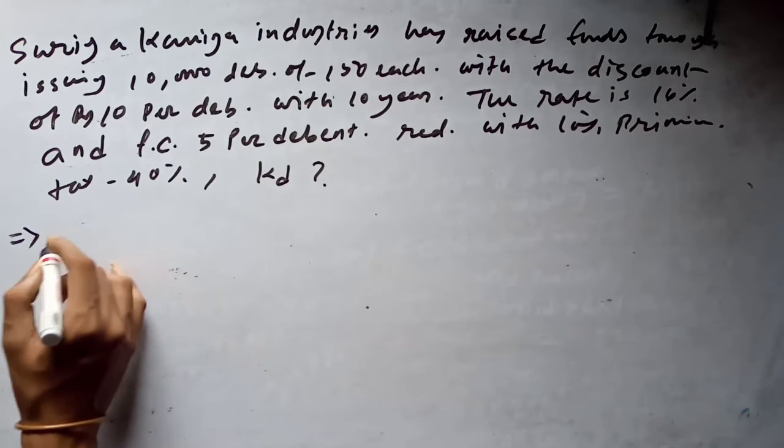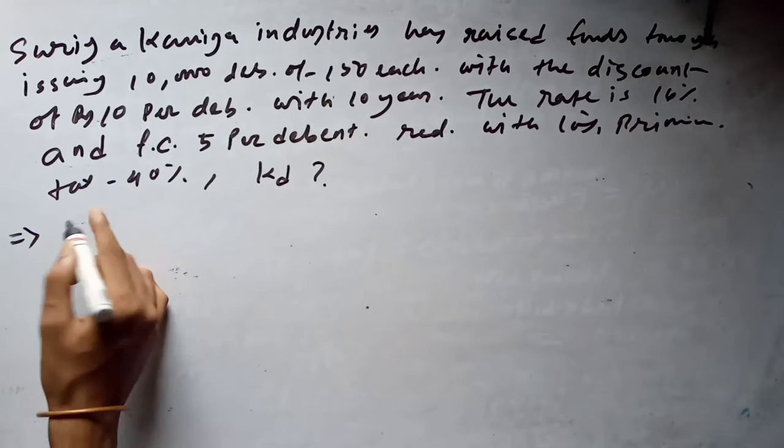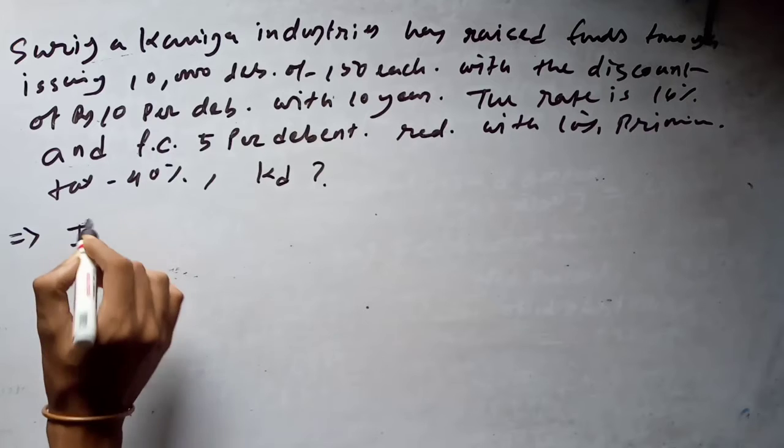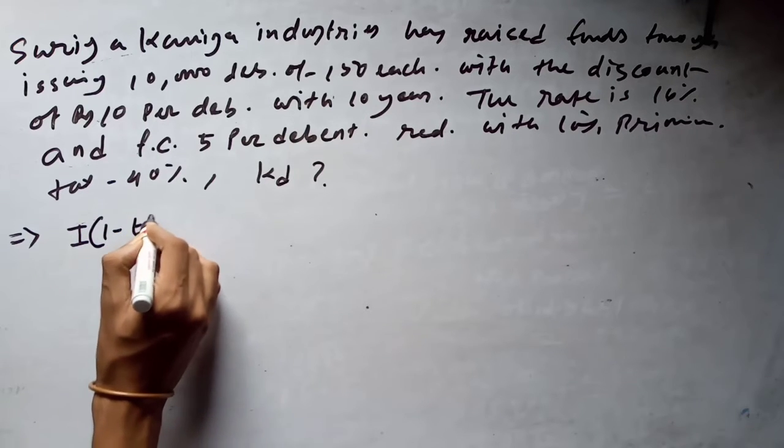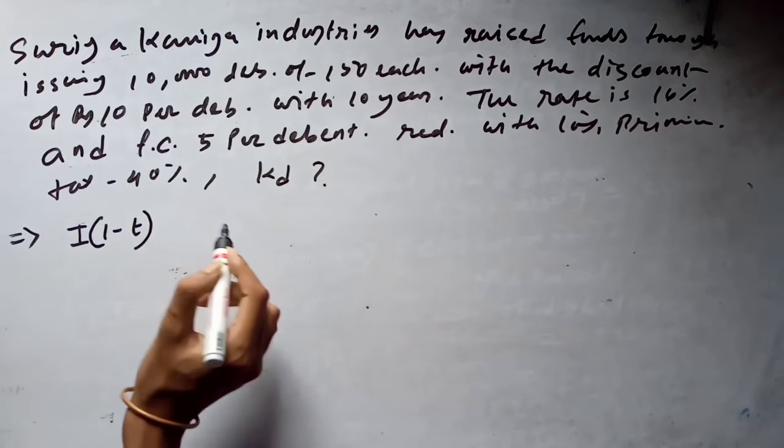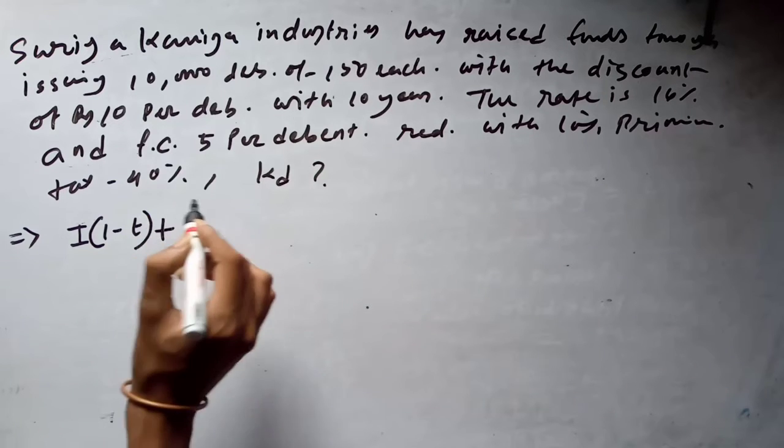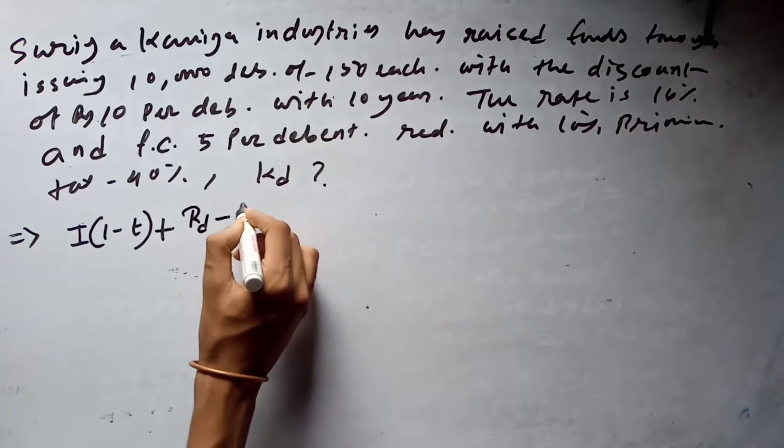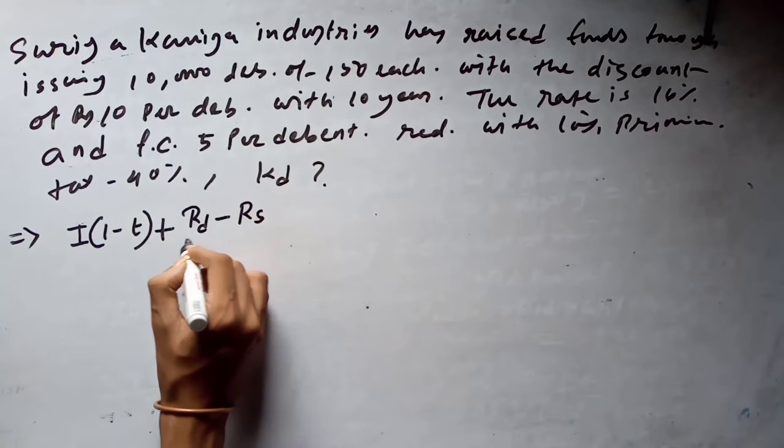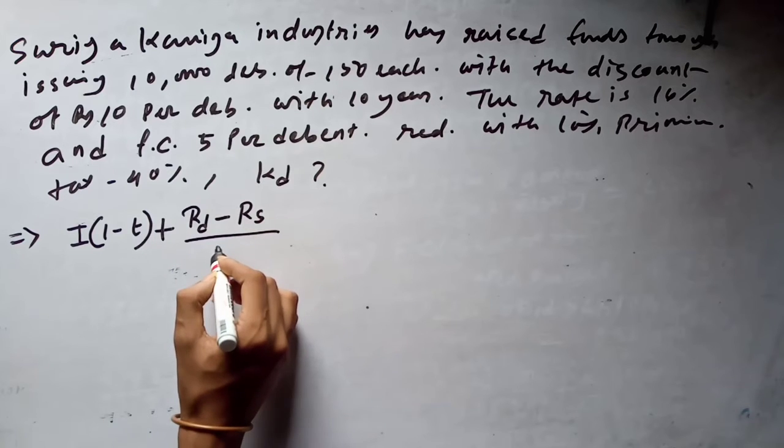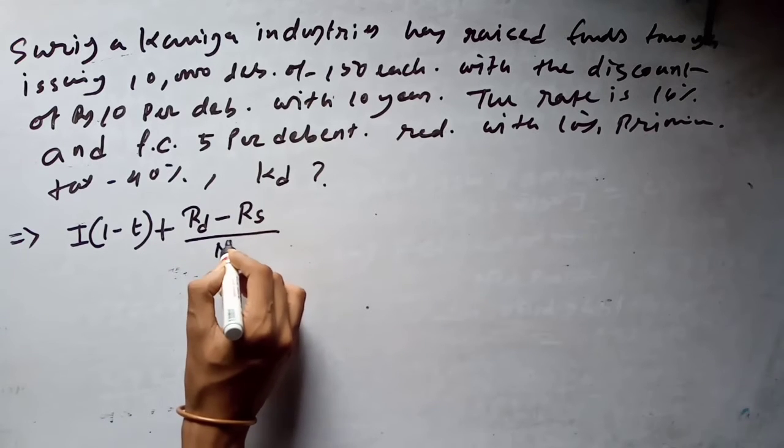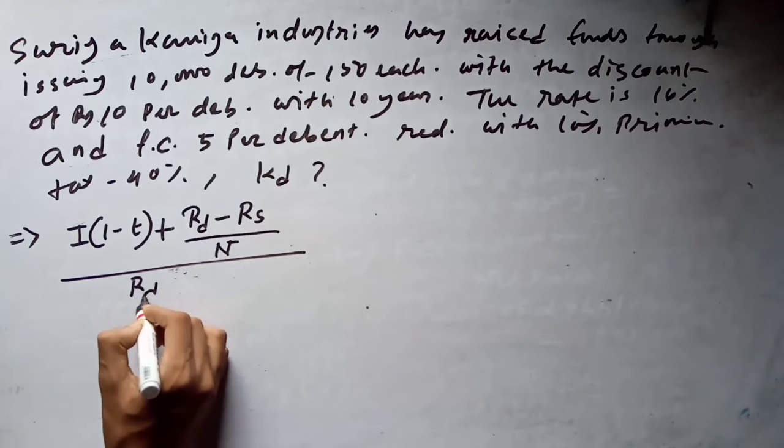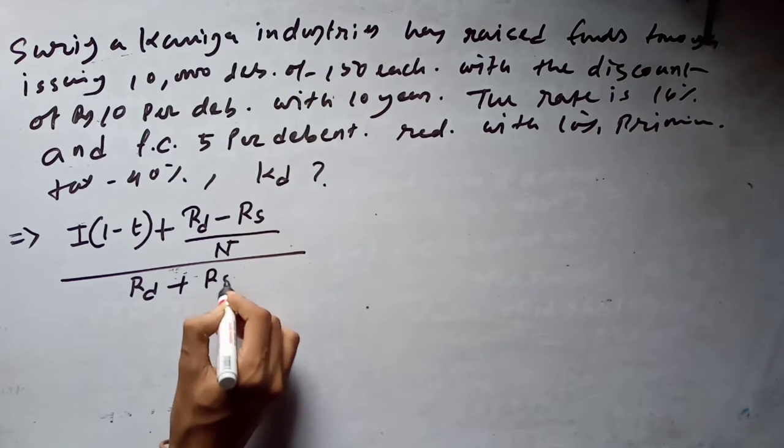Now if you write the formula, please remind the previous video what I said is: you have to get the interest with the relief of taxation plus the appreciation of capital as redeemable price minus the issuing price.